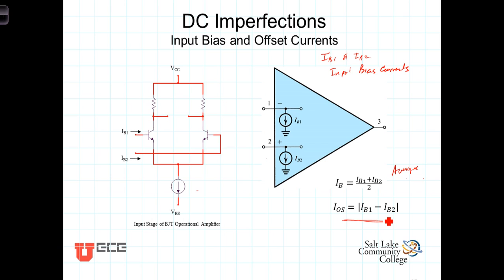As we saw with the offset voltage, even though it's intended that these transistors and resistors are identical, they won't be in fact. For the same reasons, IB1 and IB2 won't be exactly the same. The difference between them is known as the input offset current.